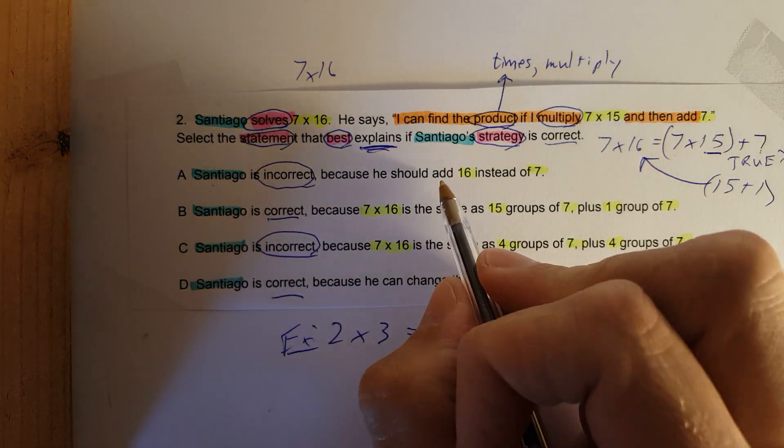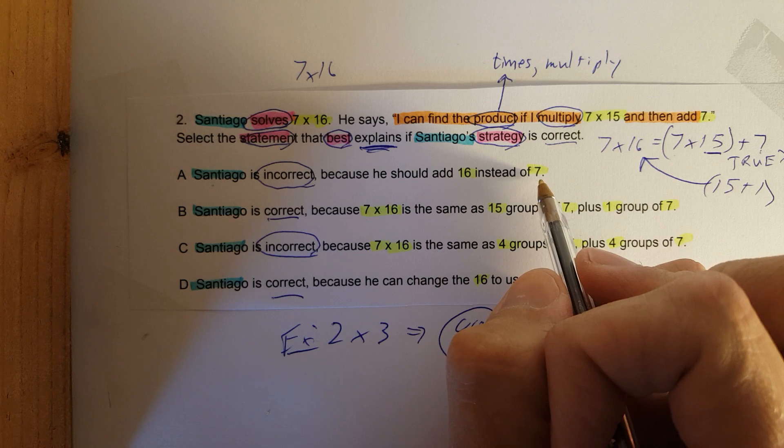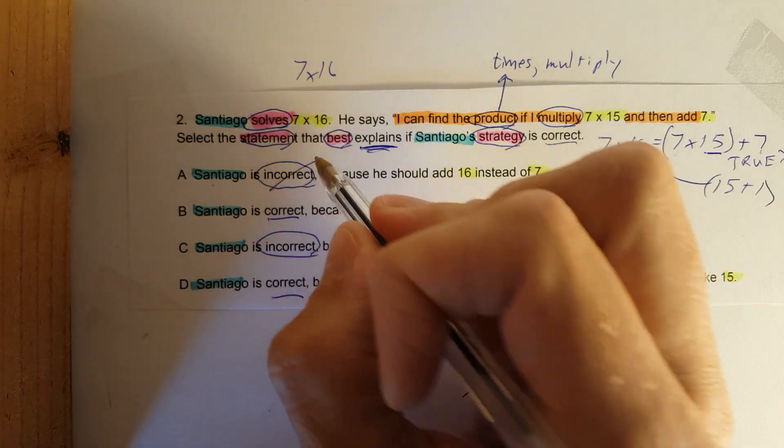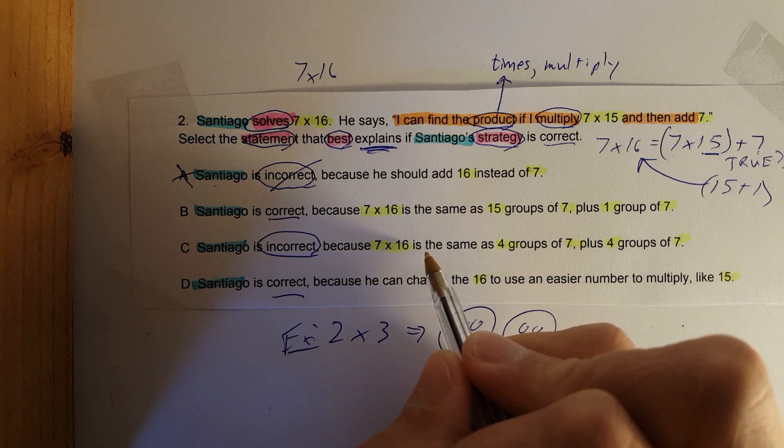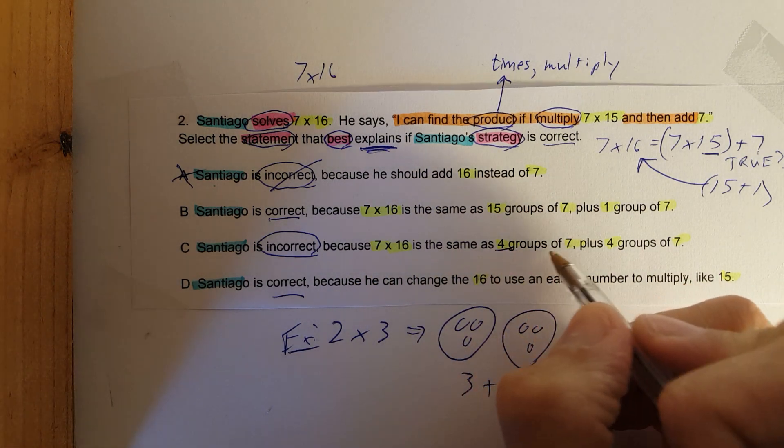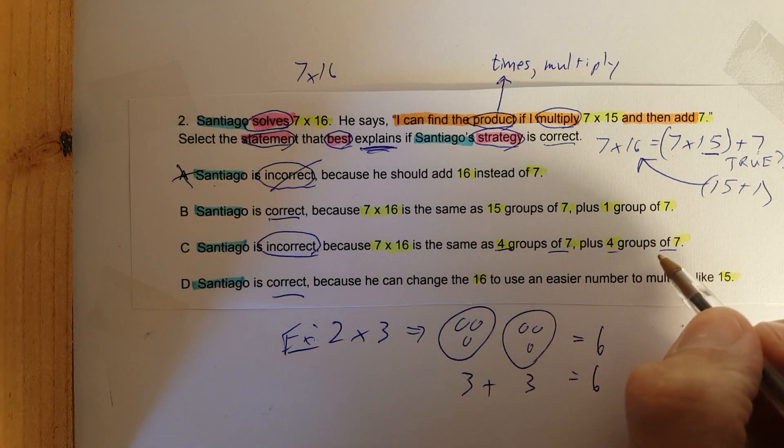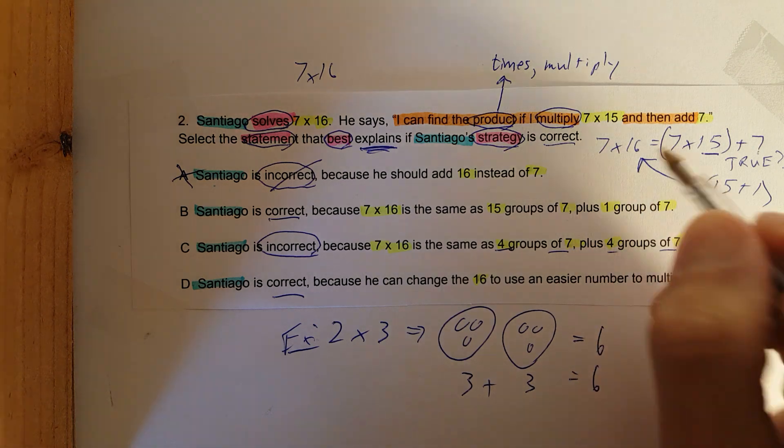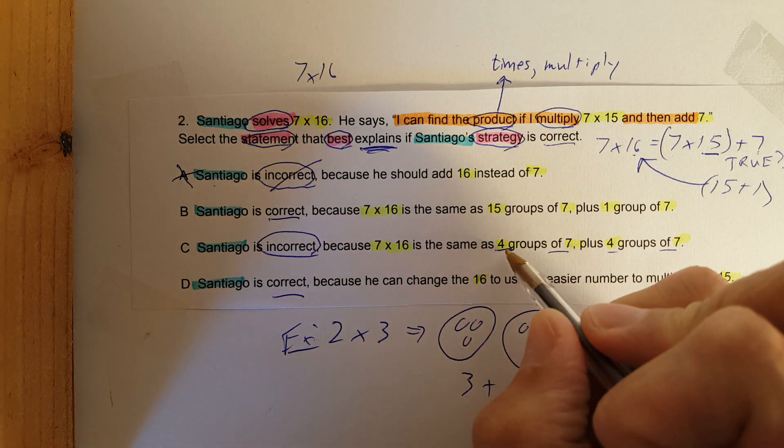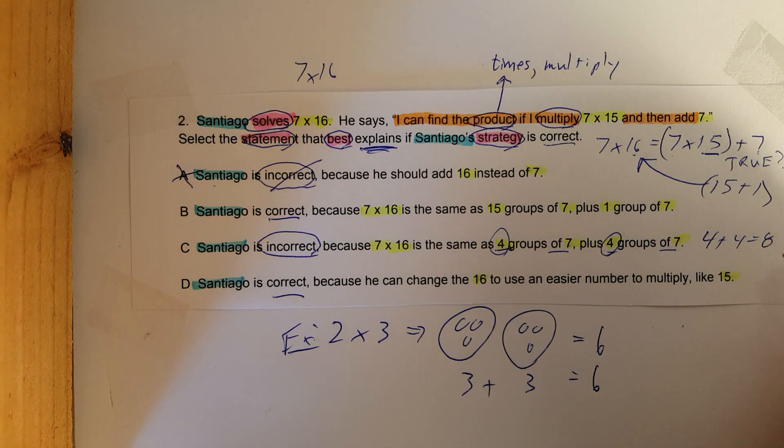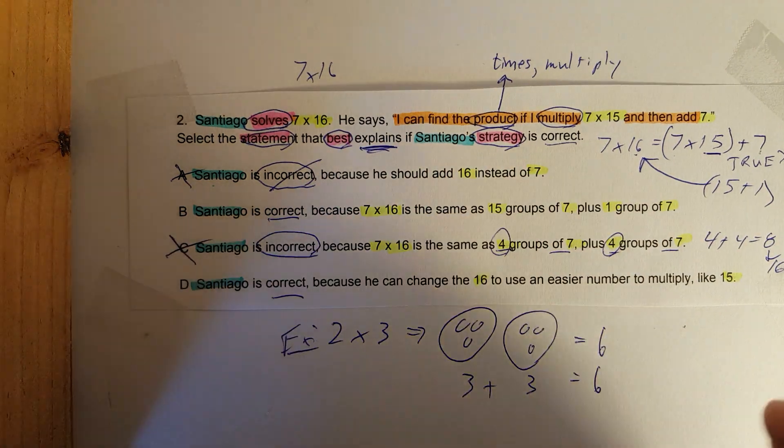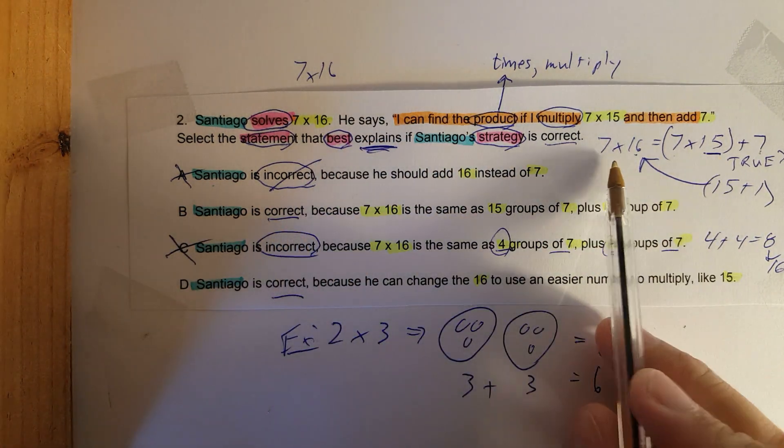Look at answer A: Santiago is incorrect because he should add 16 instead of 7. No, that's not right. And look at C: Santiago is incorrect because 7 times 16 is the same as 4 groups of 7 plus 4 groups of 7. We already know there needs to be 16 groups. This is only giving you 4 groups and 4 groups. 4 plus 4 is 8 groups, we need 16, so we know that's not right.